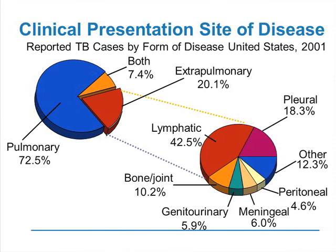Within the extra-pulmonary group, lymphatic TB is most common, but pleural, peritoneal, and meningeal forms also exist. It's worth being aware of this as a rheumatologist, dermatologist, or whatever specialist using biologic or other immunosuppressive therapies — these extra-pulmonary forms of TB will be more common.